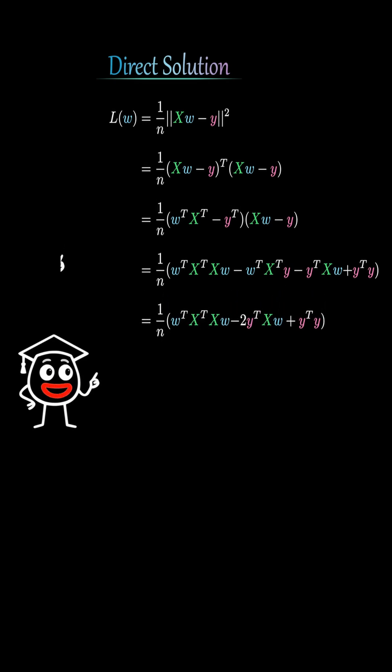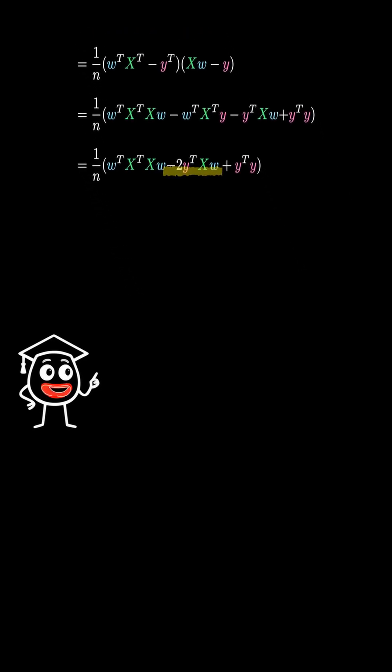Since the two terms are equal, let's unify them as y transpose Xw. That gives us a term that starts with minus 2.